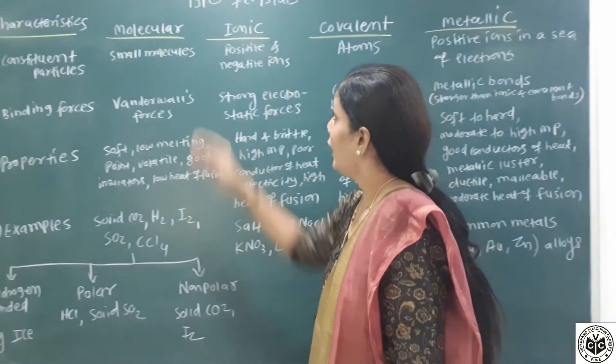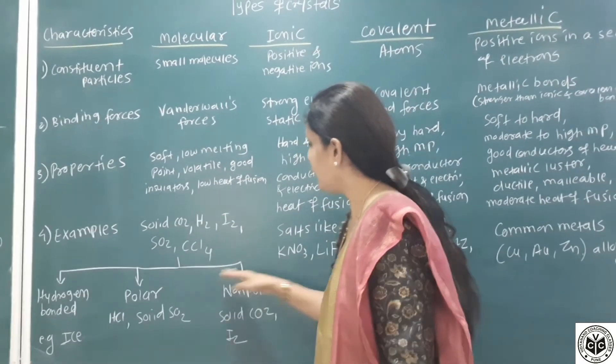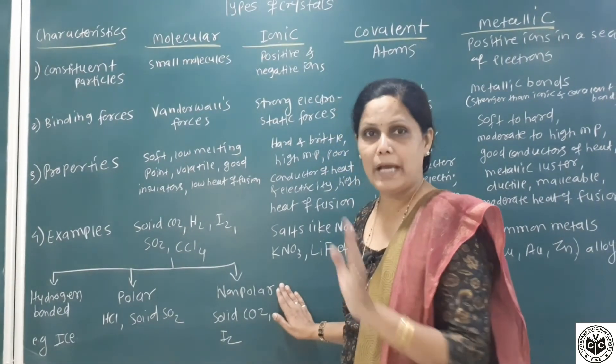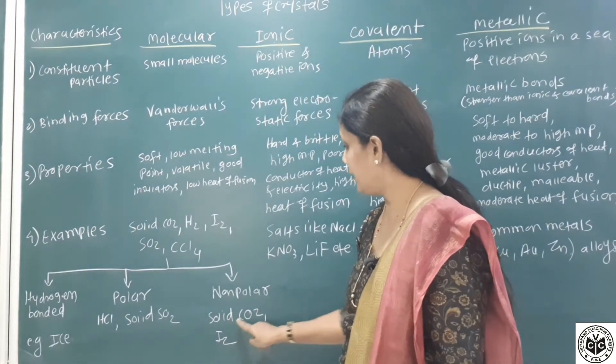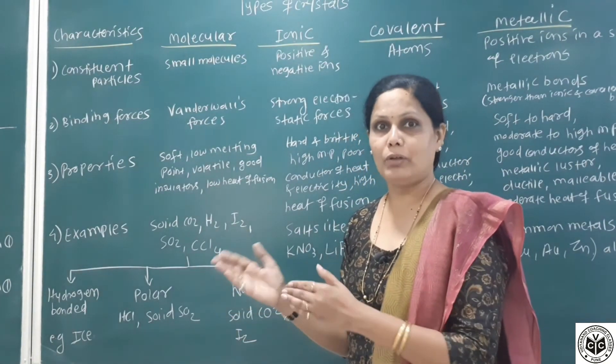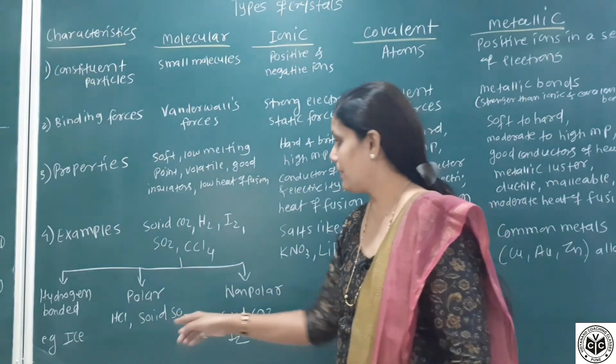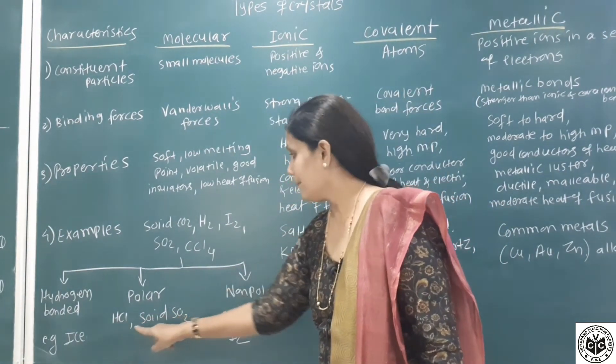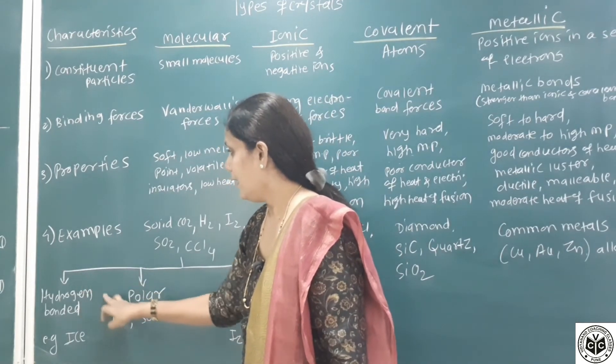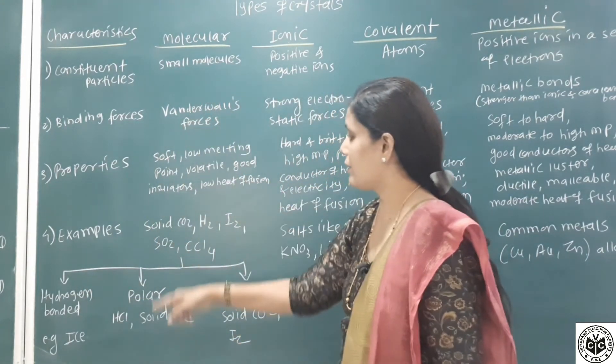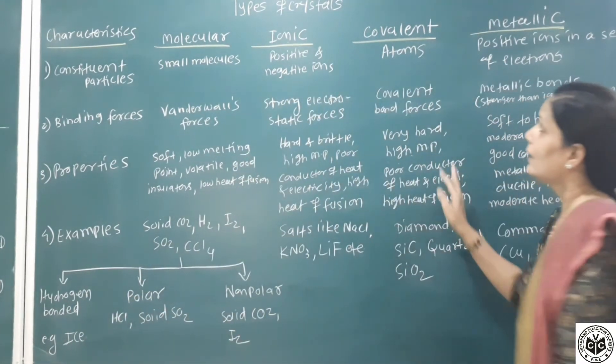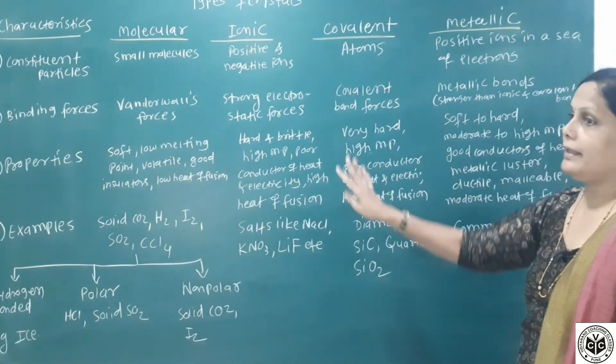Further, molecular solids are classified into three categories. Non-polar molecular solids, that means there is no charge separation. Example: solid CO2 or I2. Polar molecular solids means molecules possess a charge separation. Example: SCl, solid SO2, etc. And third class is hydrogen bonded molecular solids, and example is solid ice. So this is what about classification of crystalline solids.